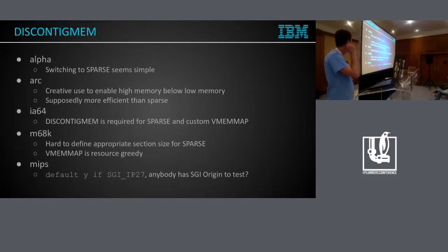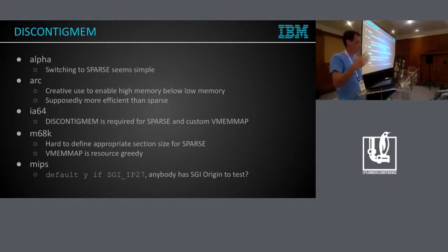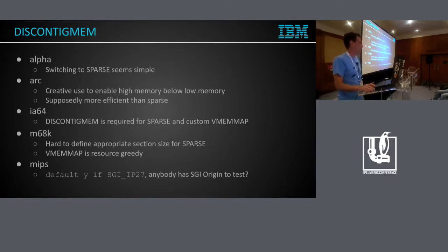Now MIPS — there is some progress here. Discontinuous memory is used only on SGI Origin machines. I actually found the guy who does have one such machine. We're getting kernel panics and trying to debug it, so probably we'll fix it pretty soon.